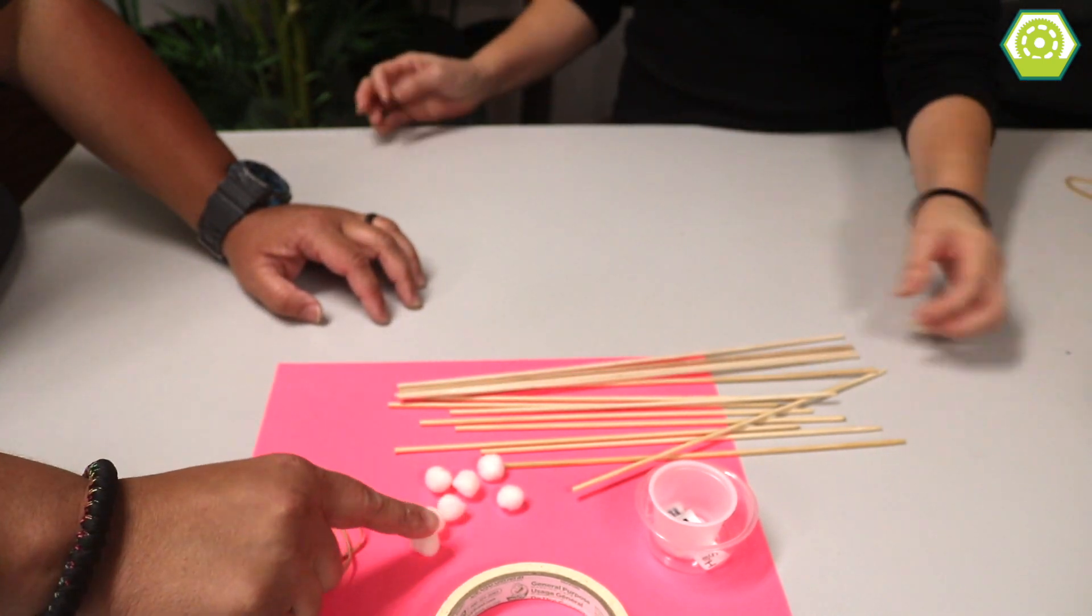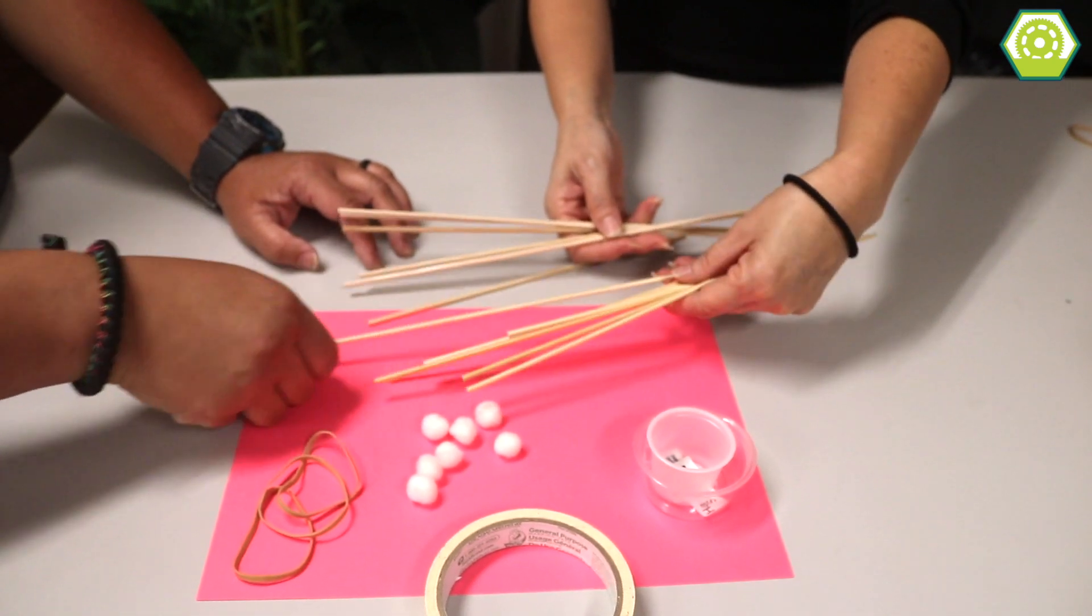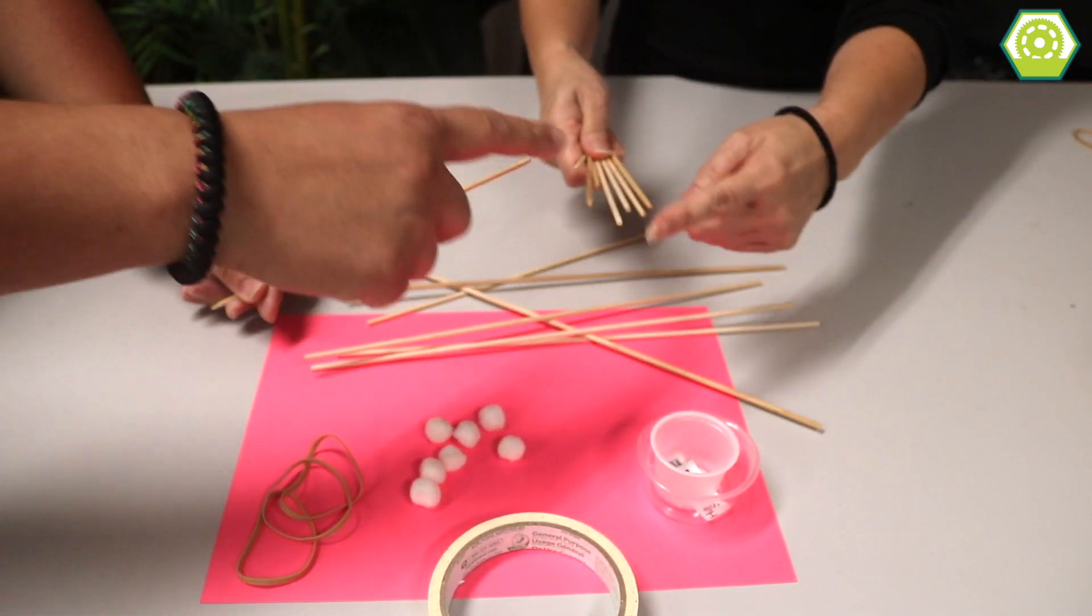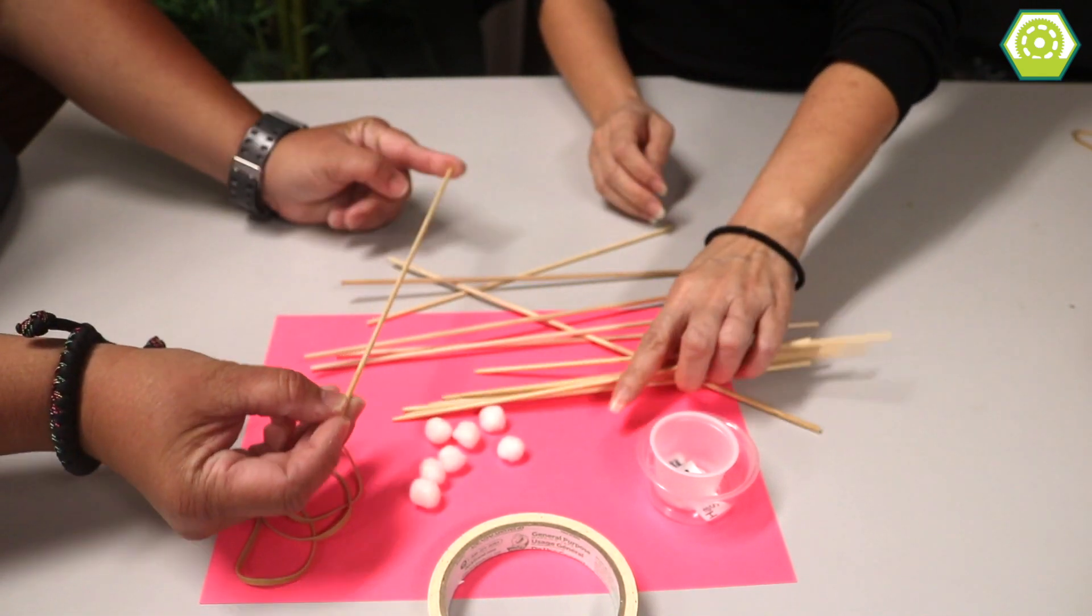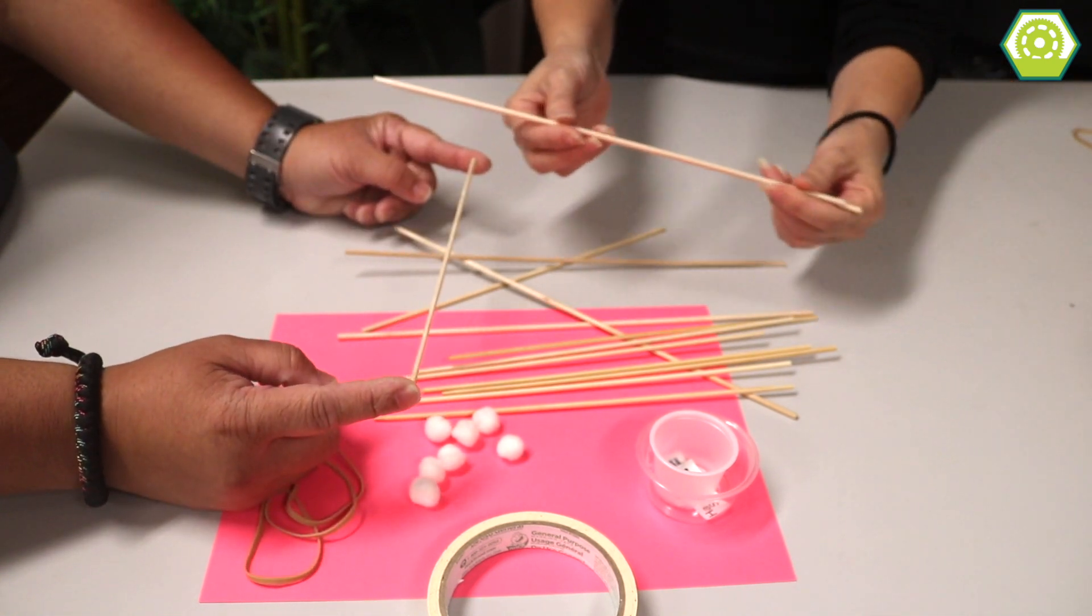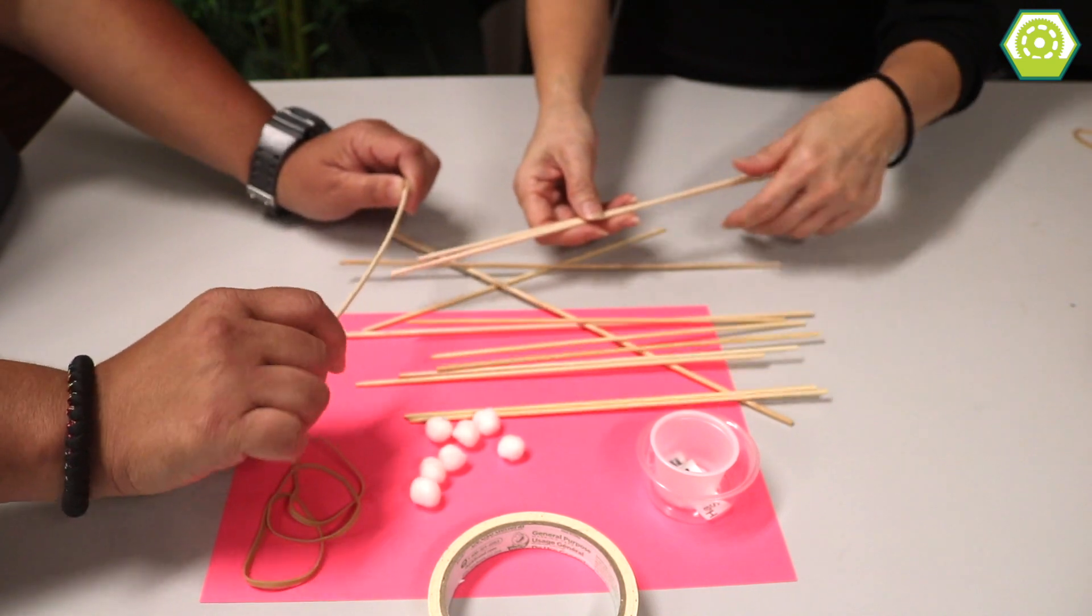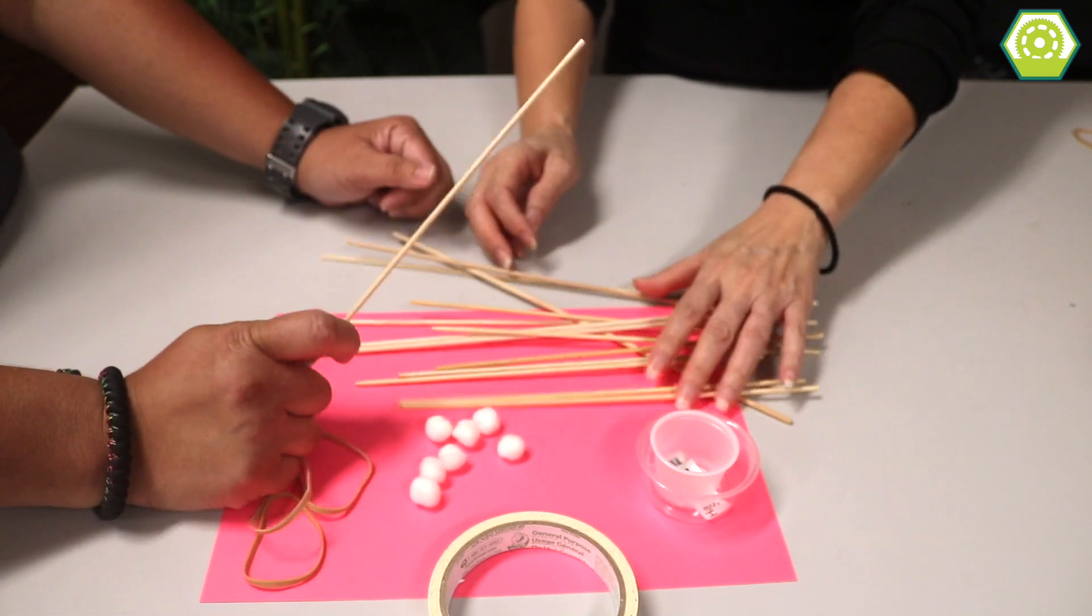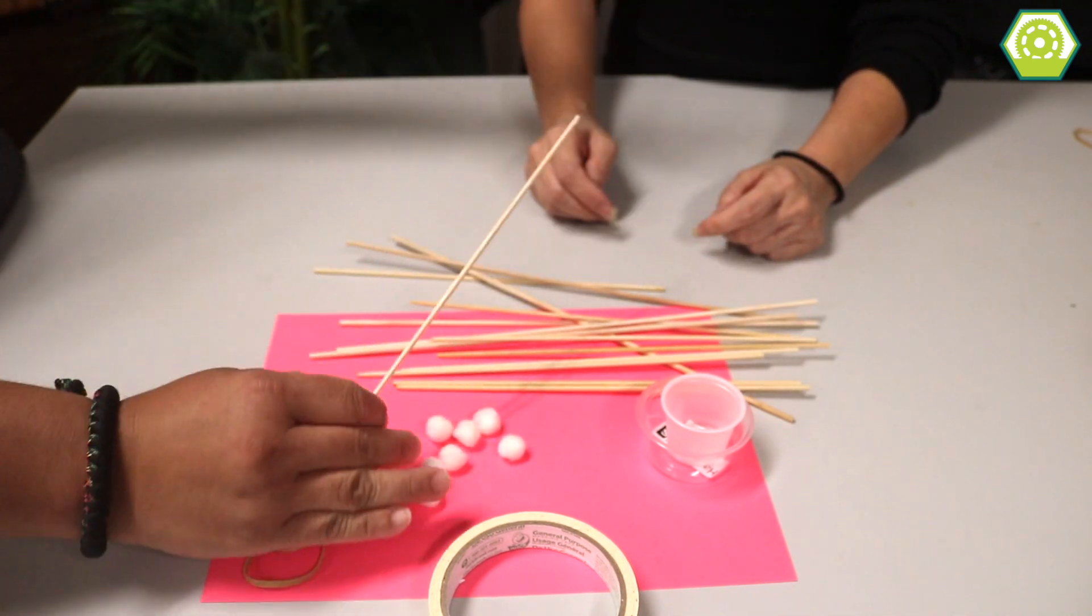So we just need either dowels or skewers. And if you're using skewers, you notice I kind of trim the top. Yeah, there's no point because it gets a little sore. We don't want you to get hurt. So you could really use anything that's like a straight stick, any kind of straight thing. I just wanted to show because you can do it two different sizes, right? But you don't want to use straws because they need to be sturdy so it doesn't bend. So you could make it shorter too.